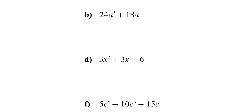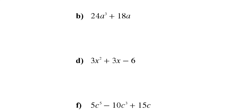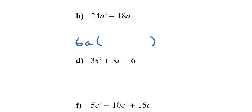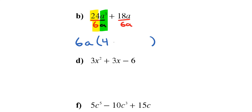For the next polynomial with 24 and 18, the biggest divisor is 6. The smaller power of a between a³ and a is a single a, so the GCF is 6a. Dividing: 24 ÷ 6 = 4 and a³ ÷ a = a², then 18 ÷ 6 = 3 and the a's cancel. So the answer is 6a(4a² + 3).